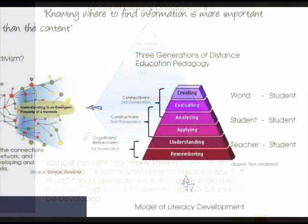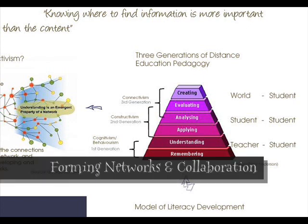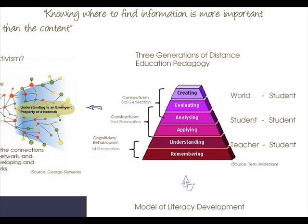We can then look at this model created by Terry Anderson — it's a way of illustrating his three generations of distance education pedagogy. He's saying if we move to a learning perspective based on forming networks and collaboration instead of managing information, we will reinvent the role of education. Conversation or instruction, influence or control, and abundance or scarcity are some of the challenges that come with this model.